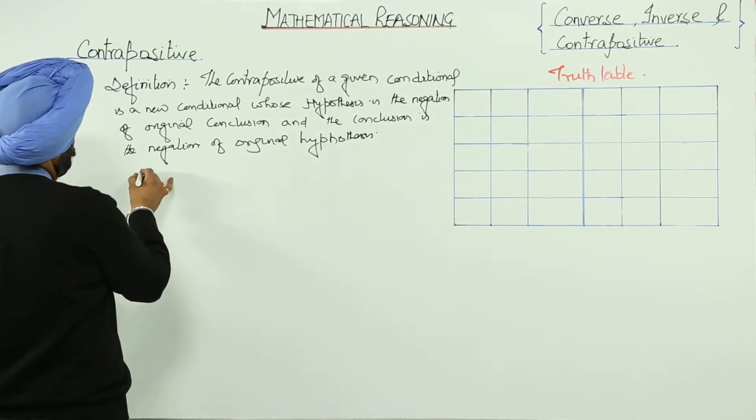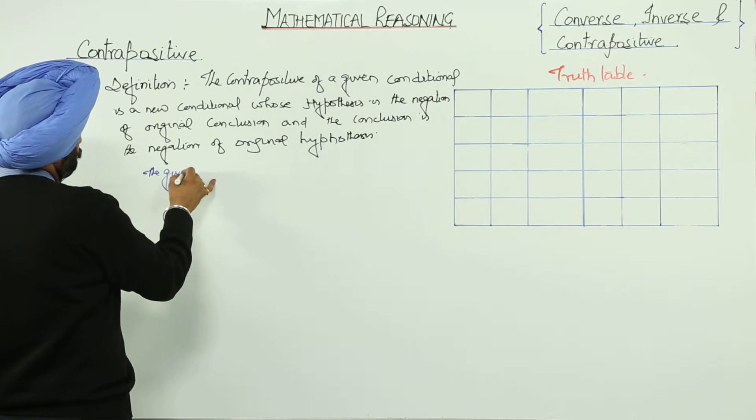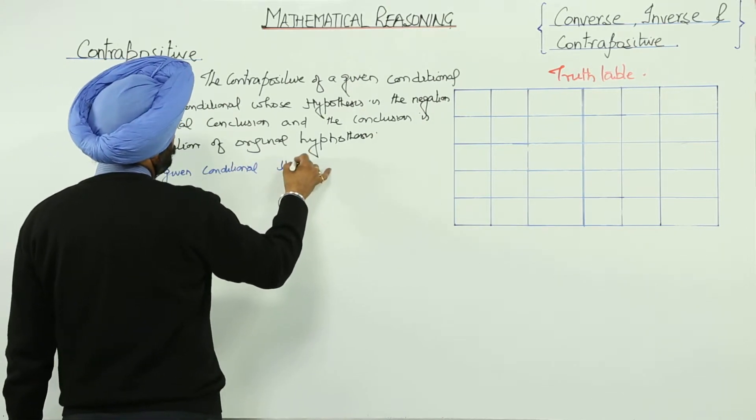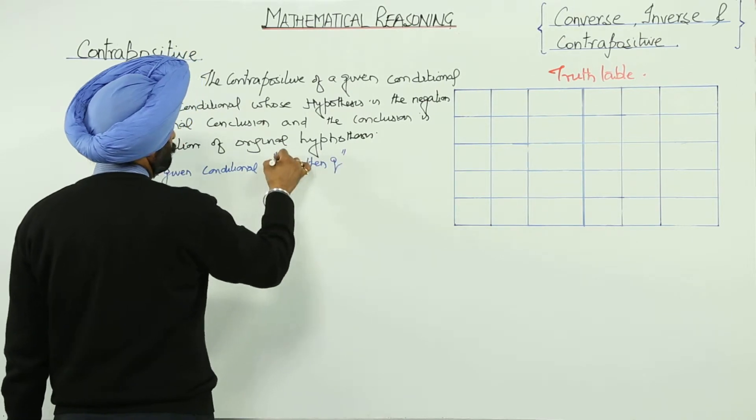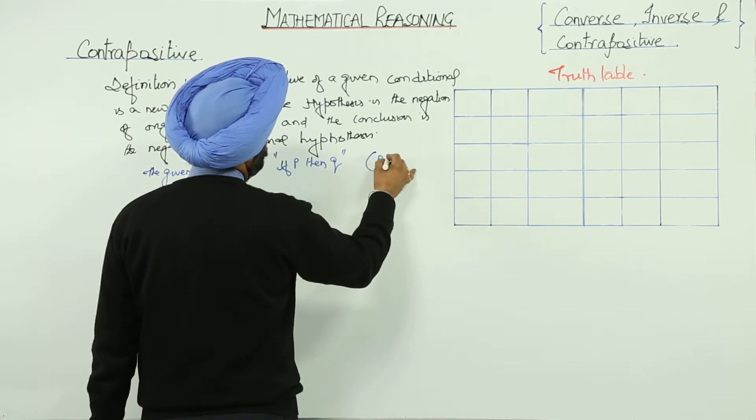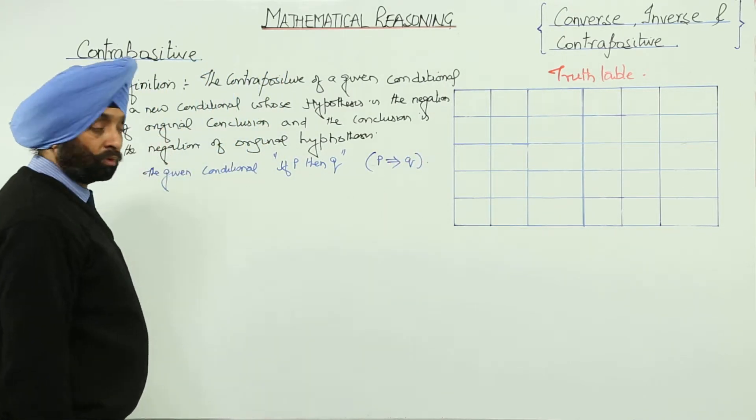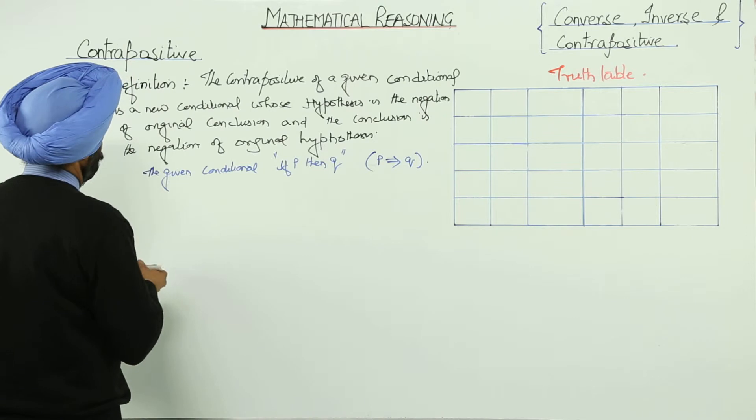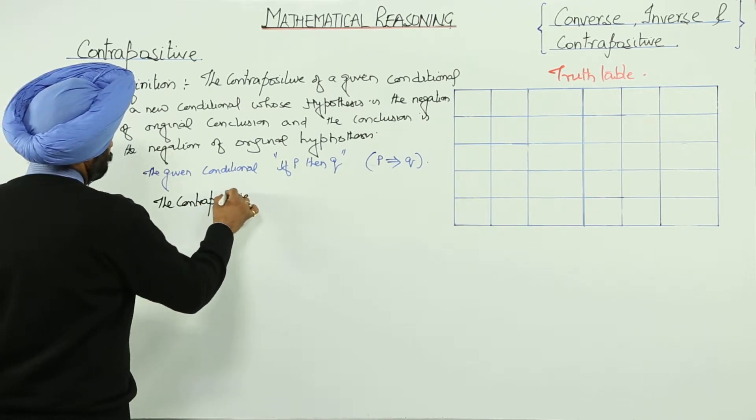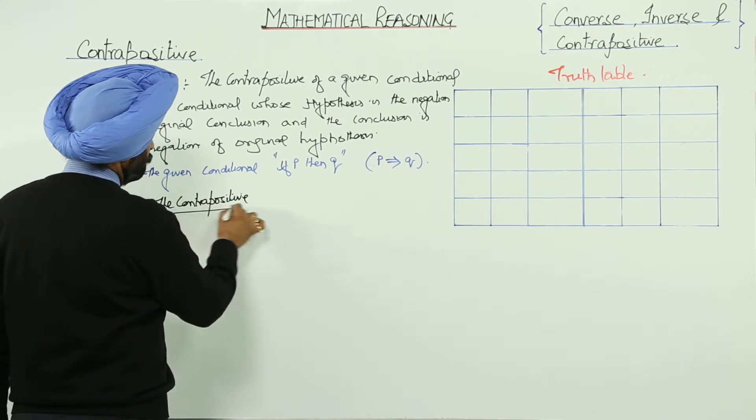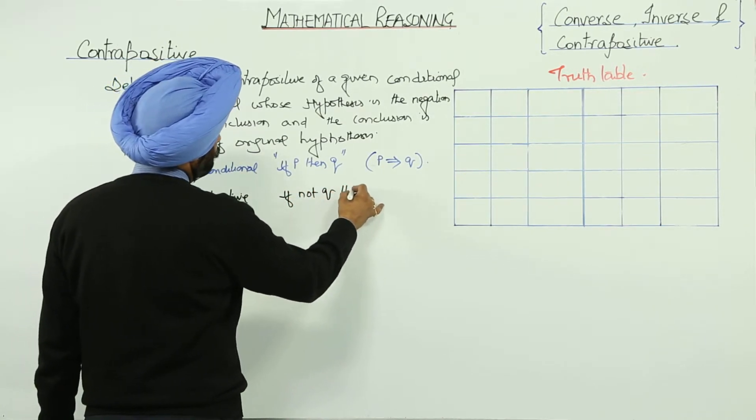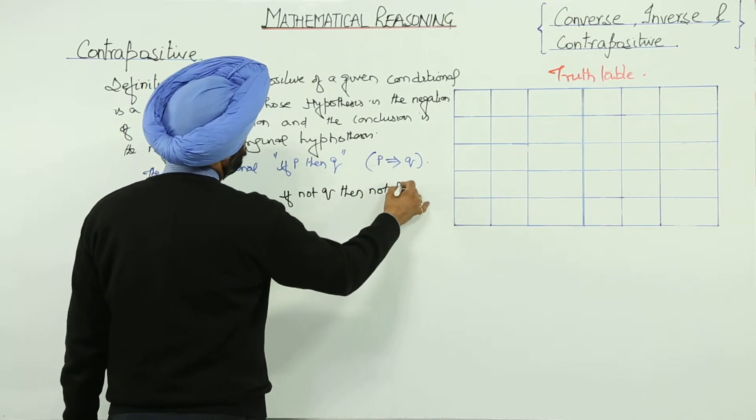Now, the given conditional if P then Q. Now, what we can write this one? P implies Q. Okay? Now, the contrapositive, it will be if not Q then not P.